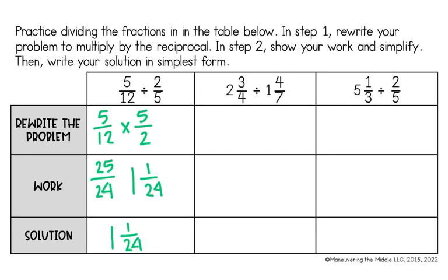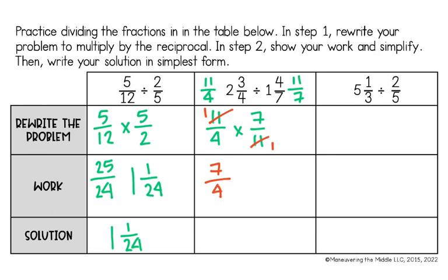Next I have 2 and 3 fourths divided by 1 and 4 sevenths. I need to change these mixed numbers into improper fractions, giving me 11 fourths divided by 11 sevenths. I keep my first fraction, change my symbol, and flip my second fraction. Since 11 and 11 are the same, they cancel out, leaving 7 fourths. 4 goes into 7 once with 3 left over, so my final answer is 1 and 3 fourths.